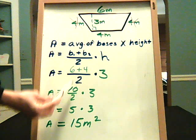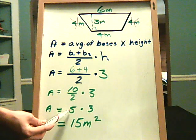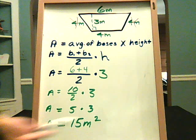So this, like we said before, simplifies to 5 times 3 is 15 meters squared.